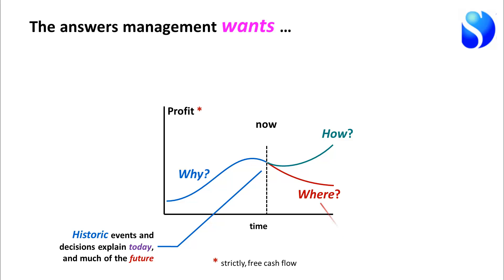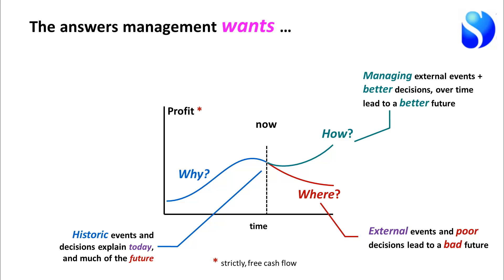So historic events and decisions explain where you are today and are already in the process of explaining something of what's going to happen in the future. If we look out to that future, we next need to answer: where are we going given the external events that might happen to us, and what if our decisions haven't actually been all that good? Are our profits going to continue going down? And the last question we want to answer is how can we better manage those external events and make better decisions over time across the whole organization to lead to a better future?